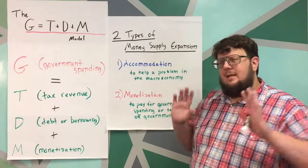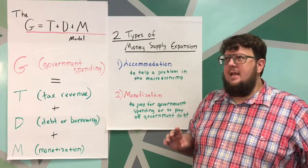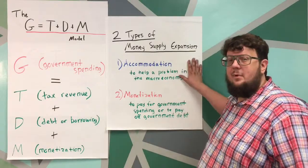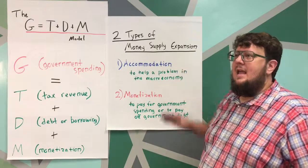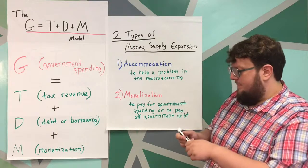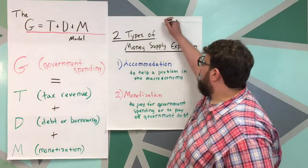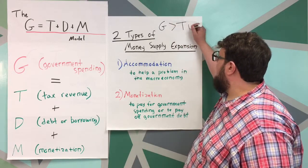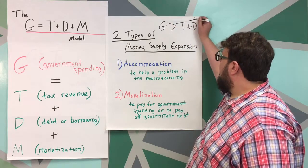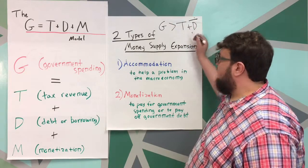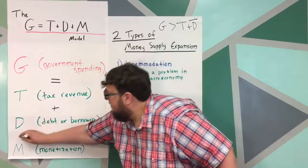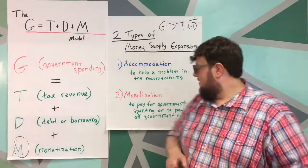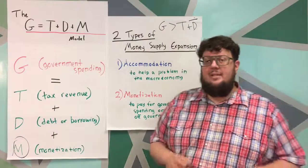Here's one way to tell what's going on: if there's an emergency, if there's a recession and they're printing more money, it's probably accommodation. If they're having budget problems — meaning government spending is greater than tax revenue and they're having trouble borrowing money — then they're using monetization in order to pay for it. If you're having a budget problem, it's usually monetization, and that will lead to inflation.